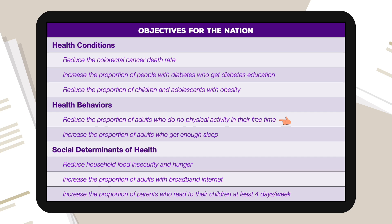As you can see, health-related issues and challenges are identified, objectives to address those issues are set, and those objectives are used to guide policies, programs, and research. For example, surveys show that a decent proportion of adults do not engage in physical activity in their free time. Knowing the many health benefits of regular exercise, the government makes reducing the proportion of adults who do no physical activity an objective. Then policies, programs, and research can be built around it, such as increasing federal, state, or city funding for parks with free exercise equipment.